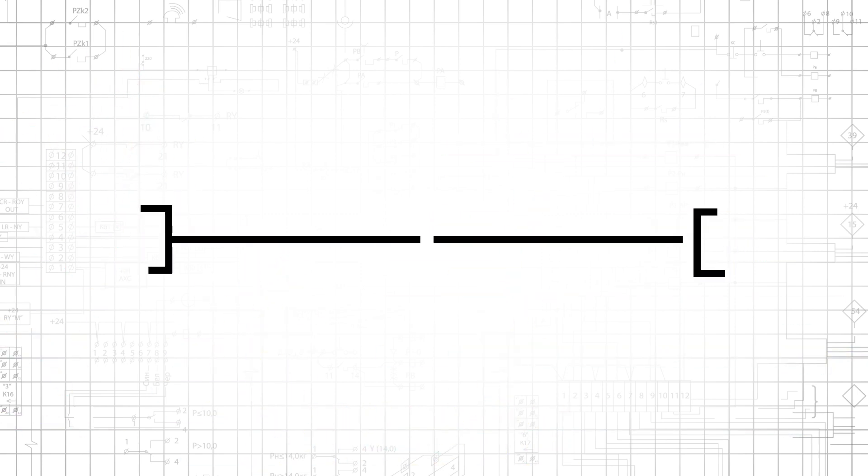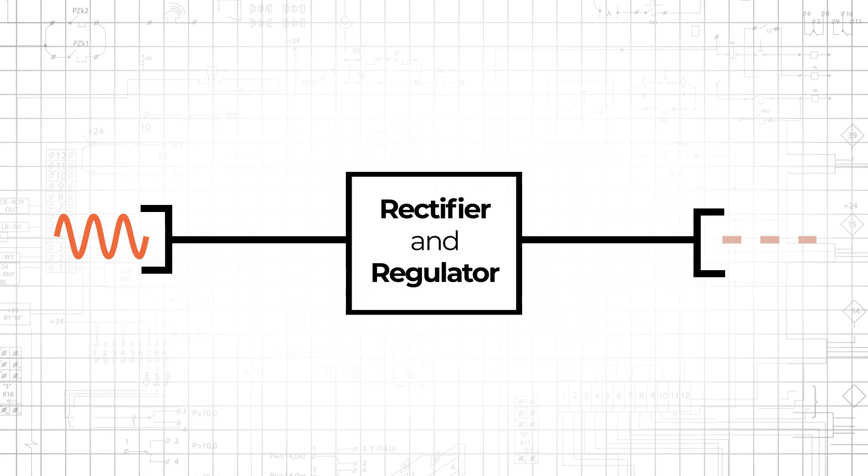Electrical energy is distributed through the power grid as alternating current, but electronic systems require DC supply voltages. An AC supply voltage can be converted into a stable DC supply voltage by means of a rectifier followed by a voltage regulator. We'll learn more about AC to DC conversion and voltage regulation in future video tutorials.